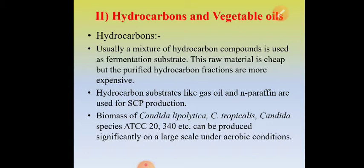The second category of raw materials is hydrocarbons and vegetable oils. Usually a mixture of hydrocarbon compounds — not a single one — is used as fermentation substrate. This raw material is cheap, but purified fractions of hydrocarbons are very expensive. Hydrocarbon substrates like gas oil and N-paraffin are used for single cell protein production.